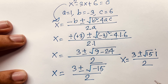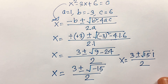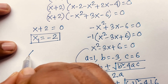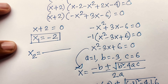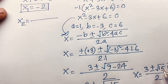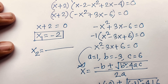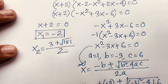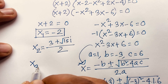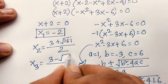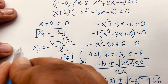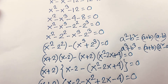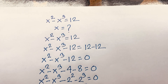Since i equals square root of −1, we get square root of −15 equals square root of 15 times i. So we find three values: x₁ equals −2, x₂ equals (3 + √15·i) / 2, and x₃ equals (3 − √15·i) / 2. This is our final answer.